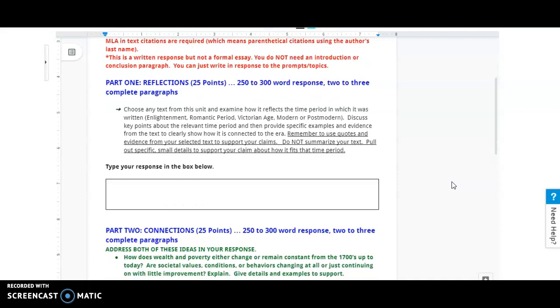Part one, Reflections, you need to write a 250 to 300 word response, two to three complete paragraphs. And you need to answer this question. Choose any text from this unit and examine how it reflects the time period in which it was written. So it could be the Enlightenment, the Romantic Period, the Victorian Age, Modern or Postmodern.